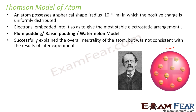This model could successfully explain the overall neutrality of the atom, but was not consistent with the results of later experiments. It was initially accepted because it could explain that even though an atom consists of positive and negative charge, overall the atom is neutral. But it could not explain results discovered later, since this model only described how positive and negative charges are distributed inside the atom. When protons and neutrons were discovered separately, there were certain results this model could not explain.